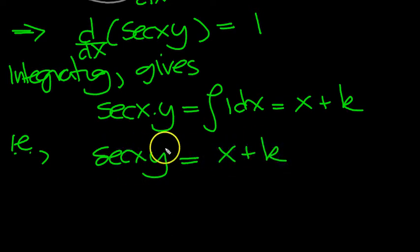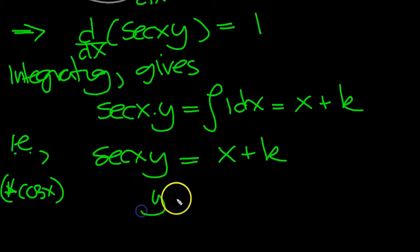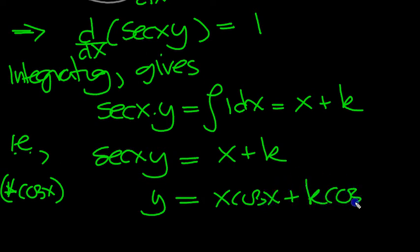Now the sec is 1 over cos, so in your mind's eye you look at that and it's 1 over cos. So you multiply by cos x all the way through. And it will cancel with the 1 over cos there. And you'll end up with x cos x here plus k cos x. There we go.